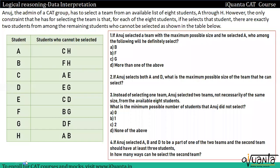Hi everyone. In this video, we will understand how we can solve such type of set. In this set, we are given that Anuj, the admin of a CAT group, has to select a team from an available list of eight students A through H. The only constraint he has for selecting the team is that for each of the eight students, if he selects that student, there are exactly two students from among the remaining students who cannot be selected, as shown in the table below.